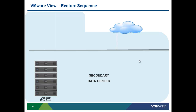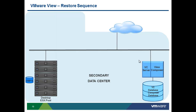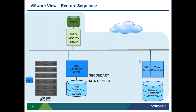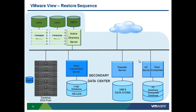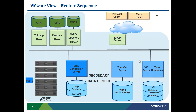Finally, let us review the backup restore sequence for View. We are assuming our whole data center went down and we are restoring infrastructure in a secondary data center. First, we need to restore ESX servers and vSphere Server. Once those are running, we restore Active Directory Server. Next, we restore View Connection Server, Transfer Server, ThinApp Share and Persona Share. And finally, we can restore Secure Server. Now our users can connect back to their virtual desktops.